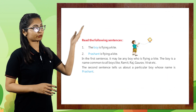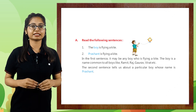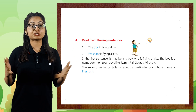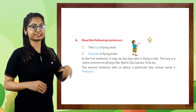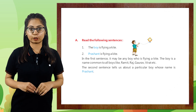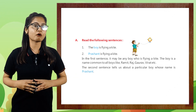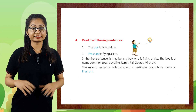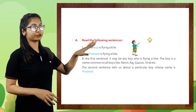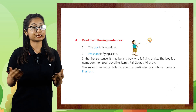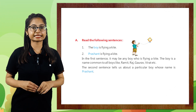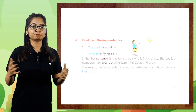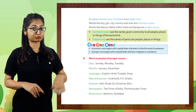Let's move with part A. Read the following sentences. Number one: 'The boy is flying a kite.' Number two: 'Prashanth is flying a kite.' In the first sentence, it may be any boy who is flying a kite. 'Boy' is a name common to all boys, like Ramit, Raj, Gaurav, and Virat etc. The second sentence tells us about a particular boy whose name is Prashanth.